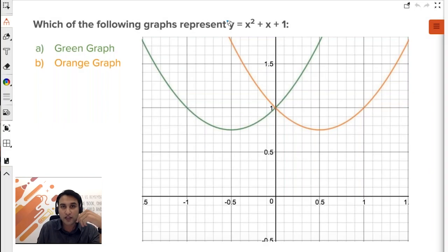Now can you guys quickly tell me which one of the two graphs, green or orange, represents the graph of this expression? Quickly, all you need to find out is the vertex. Find out its vertex, very simple.